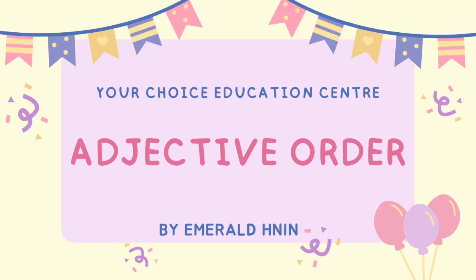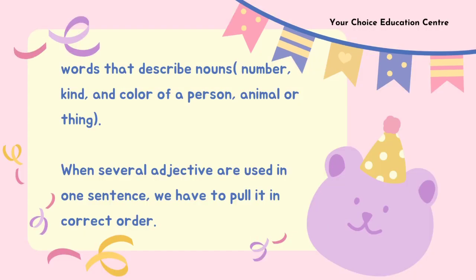Hello, everyone. Today we'll learn about adjective order. Adjectives describe nouns — they tell us the number, kind, and color of a person, animal, or thing. When several adjectives are used in one sentence, we have to put them in the correct order.